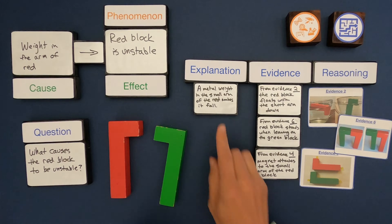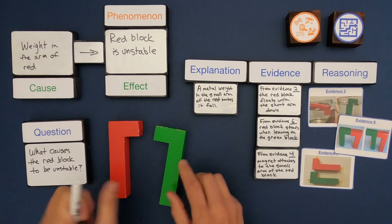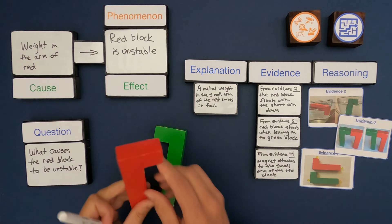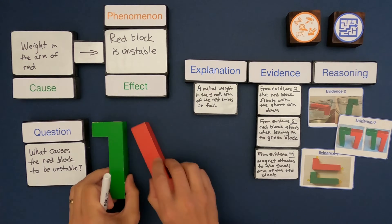My explanation is that there's a metal weight or a weight in the arm of the red block. I'm thinking there's a weight in here, and since that is heavier it causes it to fall down. So that's my explanation.